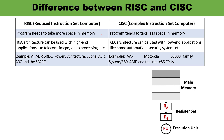A RISC program needs to take more space in memory, while it takes less space in the case of CISC. So RISC takes more memory space. However, since memory is not a major concern today, RISC is considered the preferred one.